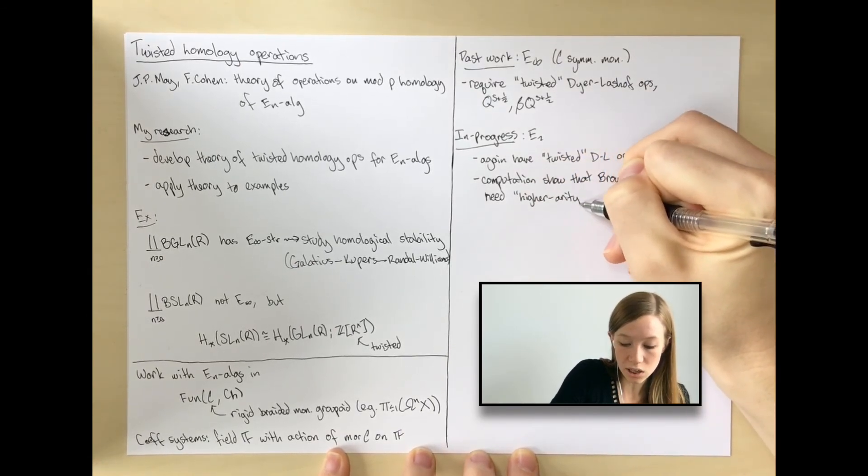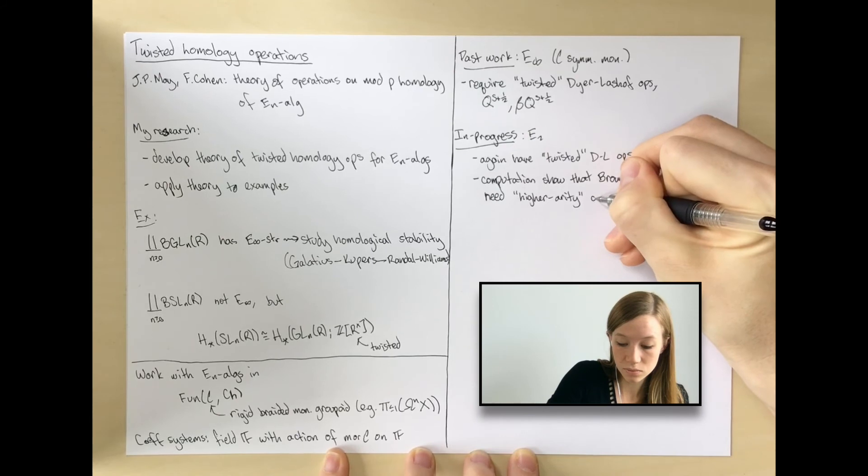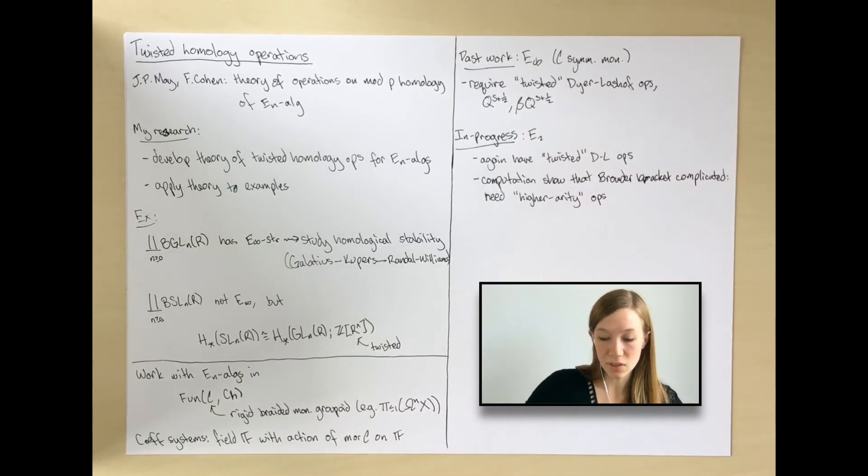These are operations that take in more than two inputs, and they behave a bit like a Browder bracket, but they don't decompose into iterated binary operations. So they're really new operations, and you need them to generate all operations.